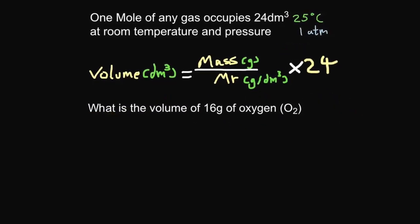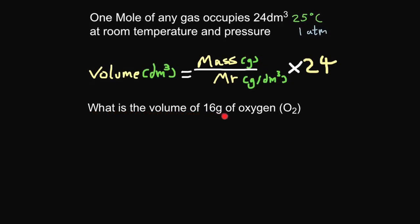Have a go at this question. What is the volume of 16 grams of oxygen? So we've been given the mass, 16 grams. We need to work out the Mr. If you go to your periodic tables and look up oxygen, it's always the biggest number which tells you the relative formula mass. So the relative formula mass turns out to be 16 for one oxygen, so the Mr equals 16.